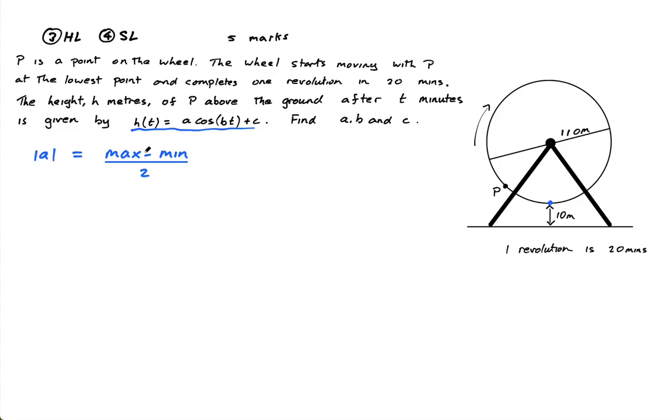That distance is going to be 55, but hopefully you've seen this formula. It's not in the formula booklet, but hopefully you know this formula. So the maximum height here is actually going to be 120 because this is 10 and this is 110. So we're up to 120 and the min is 10. So it's 120 minus 10 over 2, which is 110 over 2, which is 55. So the mod of A is 55.